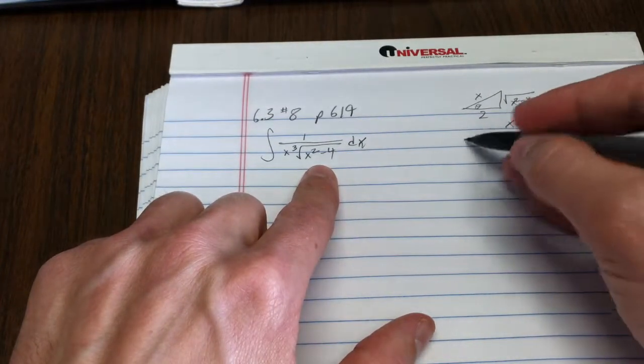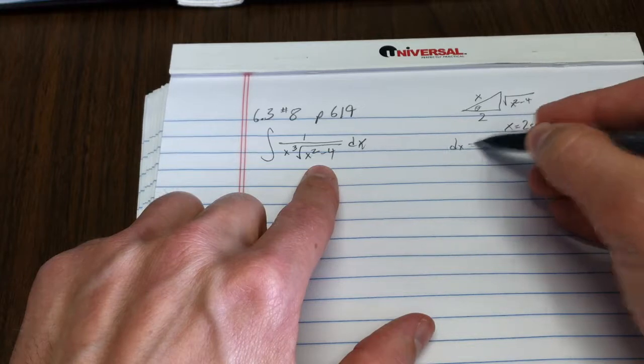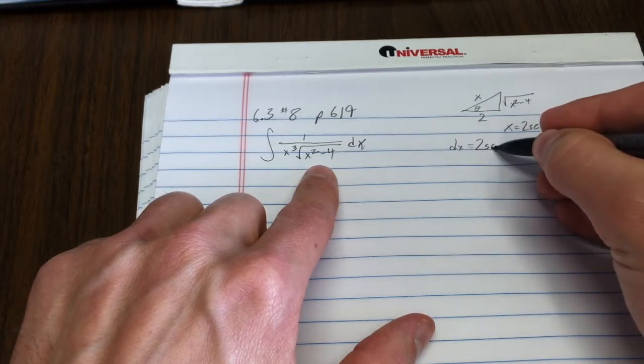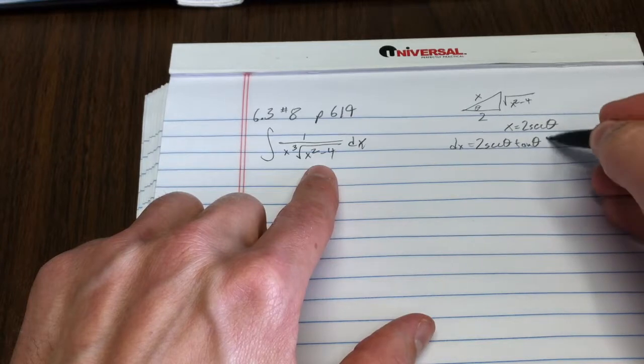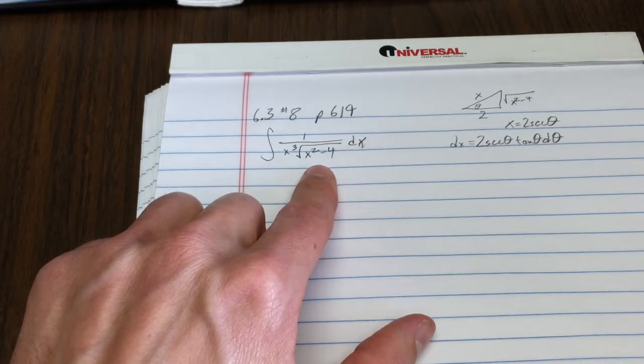Well, what's that mean? That means that we have a dx that is 2 secant theta tan theta d theta. Sounds good.